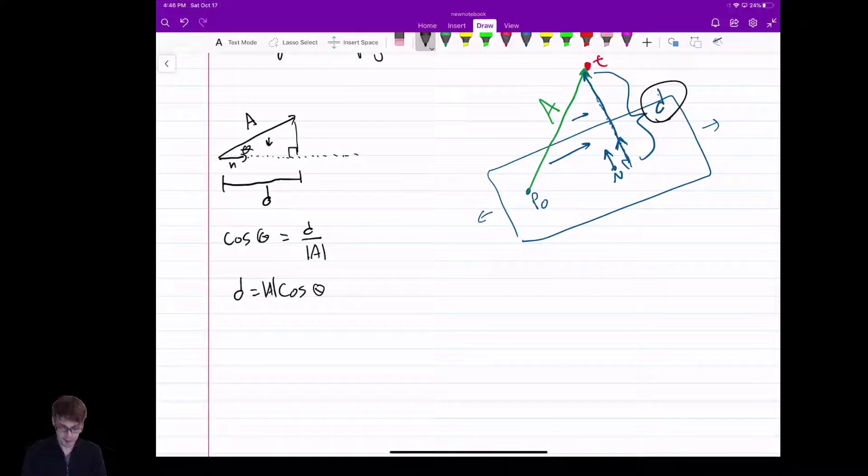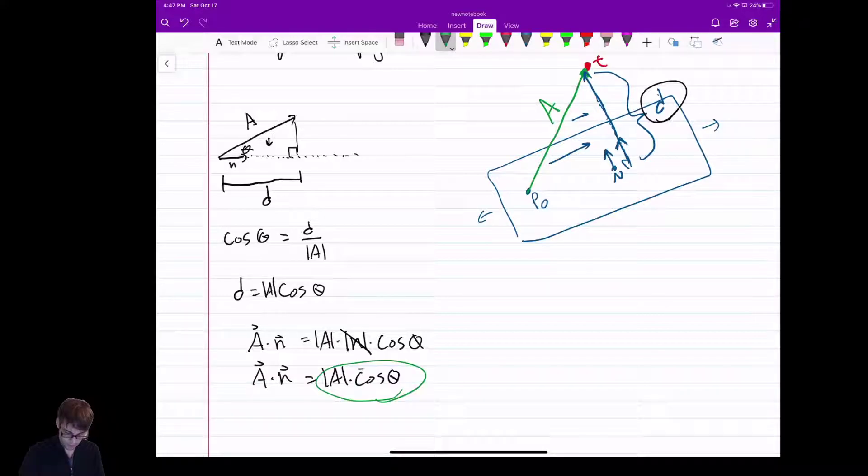Can I do the dot product here? Now, remember, if I dot product A with N, it's going to give me the length of A times the length of N times cos theta. Well, it turns out that N is normal. It's length 1, so we can get rid of that. So then the dot product of A and N is just the length of A times cos theta, which equals D.